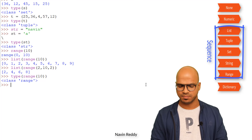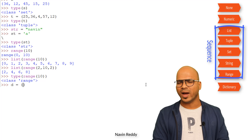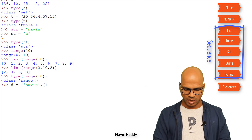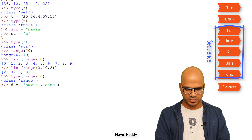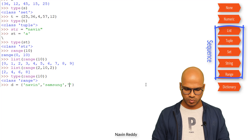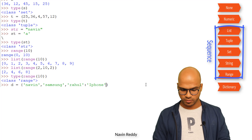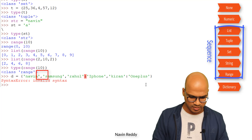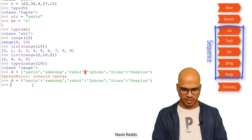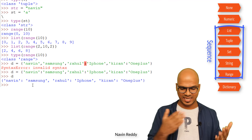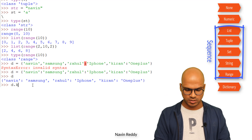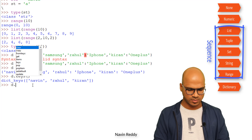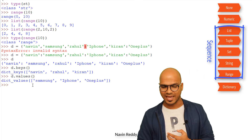Let's define a dictionary: D equal to curly braces. The reason for curly braces — keys should not repeat, just like a set. I'll say 'Navin': 'Samsung', 'Rahul': 'iPhone', 'Kiran': 'OnePlus'. If I print D, we get key-value pairs. I can call D.keys() to see the keys — Navin, Rahul, Kiran. And D.values() gives Samsung, iPhone, OnePlus.